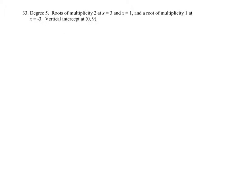I know that it has multiplicity 2 at x equals 3, so at x equals 3 there's a zero. I know there's a zero at 1, and there's also a zero at negative 3.